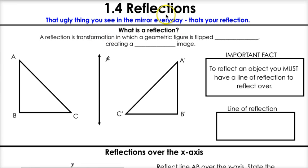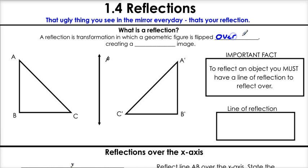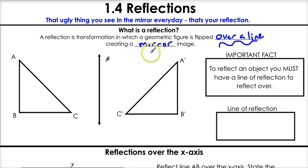We're going to be talking about geometric reflections, which are a little bit different. A reflection is a transformation in which a geometric figure is flipped over a line, creating a mirror image. These are our two key points: you reflect over a line and you get a mirror image.